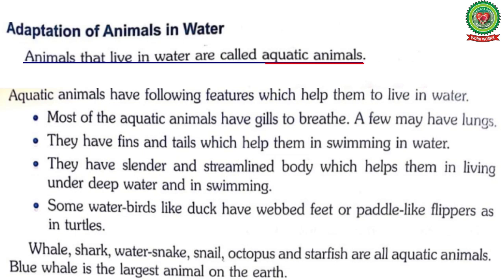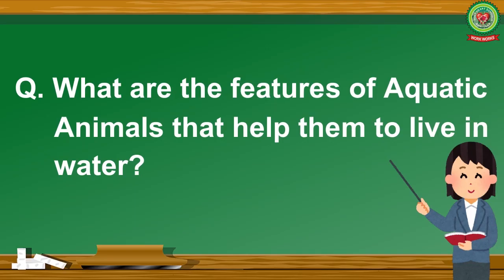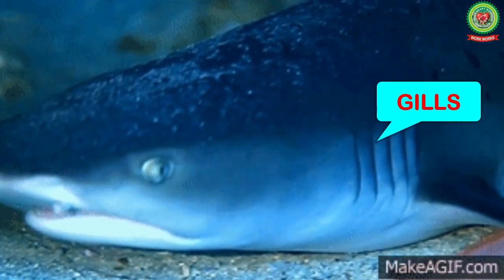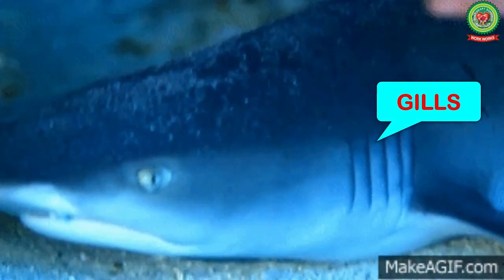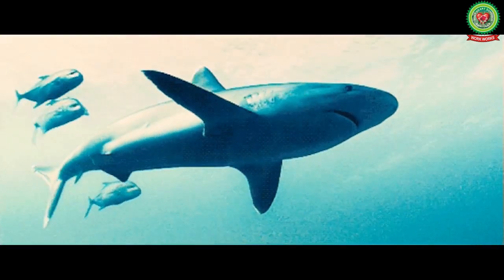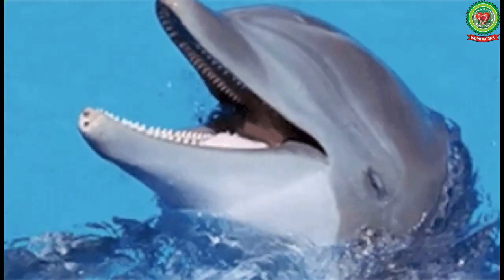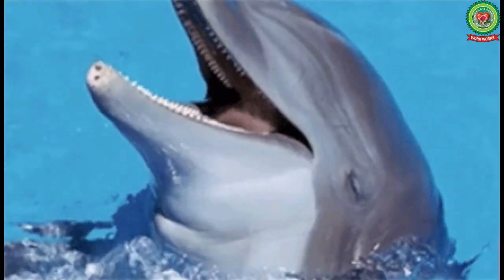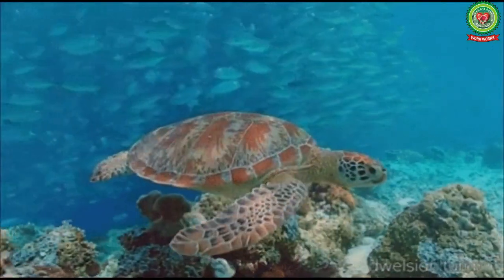The question arises: what are the features of aquatic animals that help them to live in water? The answer is most aquatic animals have gills to breathe — for example, fishes — but few animals breathe through lungs, for example, turtles.